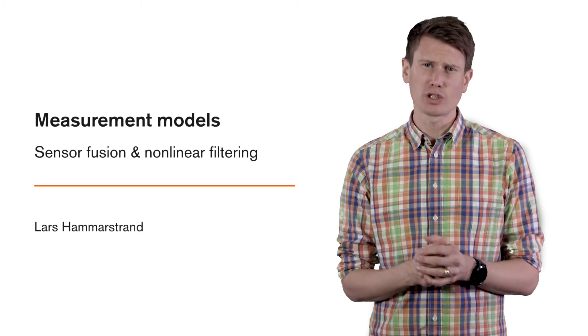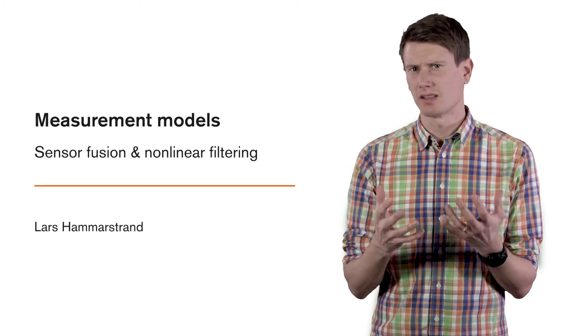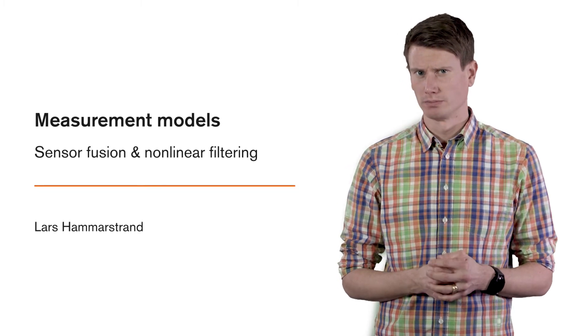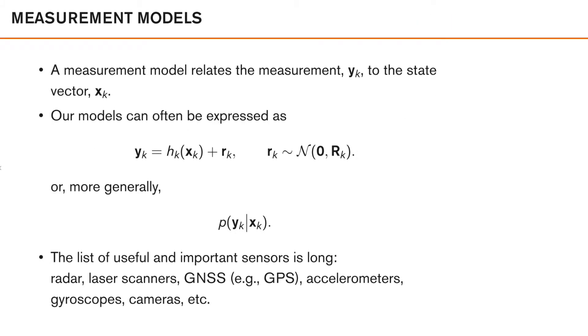We'll also look at how sensor calibration can be viewed as an estimation or a filtering problem. A measurement model relates the measurement yk to the state vector xk. We often express our models on the following form: yk is equal to hk of xk plus rk, where rk here is a measurement noise, which we usually assume to be Gaussian with zero mean and covariance capital Rk.